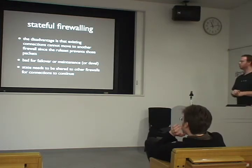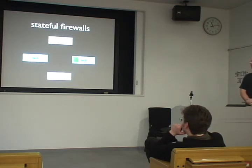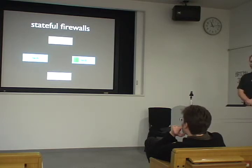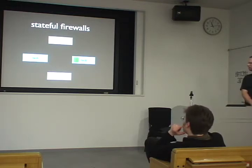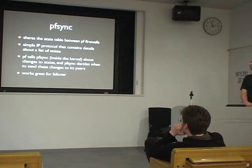The obvious solution is to share the state table between all the firewalls. Without state sharing, the client builds a packet, sends it through the firewall which builds the state entry and sends it to the server. The server builds a reply, but if firewall B fails at this point, the server forwards the reply to firewall A, which doesn't have the state entry, and the packet gets dropped, breaking the connection.